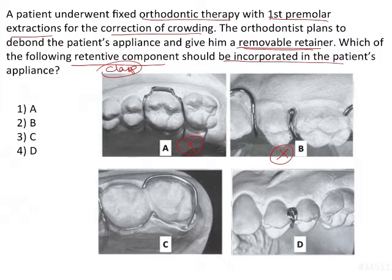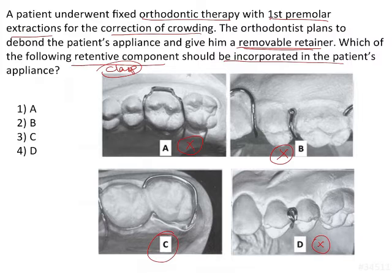The triangular clasp is also an option, but both the triangular clasp and the Ballin clasp do not have adequate retentive ability compared to the Adams clasp. These are eliminated, leaving the circumferential clasp with a C clasp, which is usually placed behind the second molar so that it prevents any opening up of space.